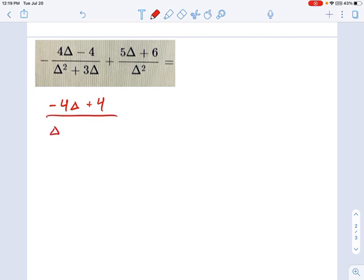I see a GCF of delta, so that's delta times delta plus 3. And the other fraction is just 5 delta plus 6 on top and delta squared. There's nothing really to factor here, but humor me for a moment because I can see where we're going with this problem.